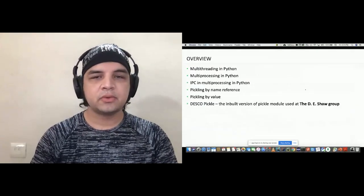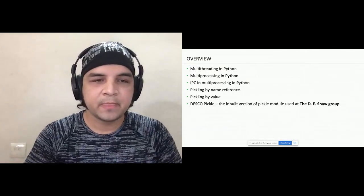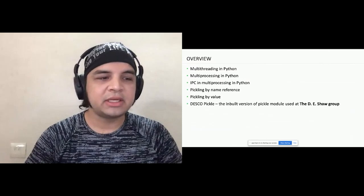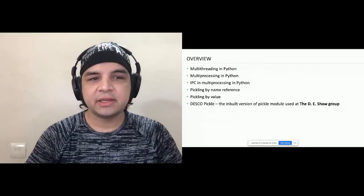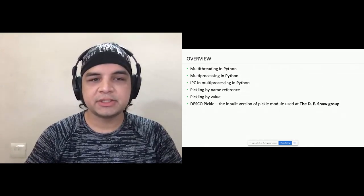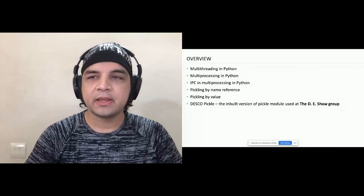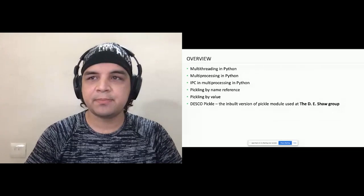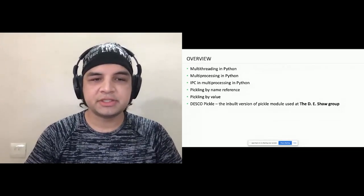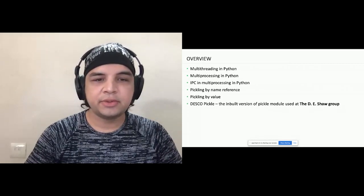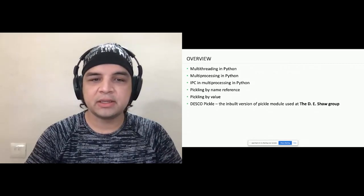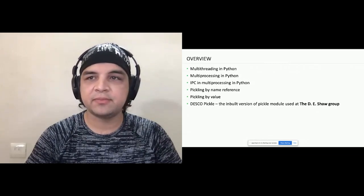Here is the overview of topics we will cover today. We will see the limitations and advantages of both multi-threading and multi-processing in Python. We will then move on to interprocess communication and how it generally happens in Python. Then we will see the serialization part, called pickling in Python — how it is achieved and the two types: by name reference and by value. Lastly, we will look at some features of DiscoPickle, the pickle module we use at DE Shaw for quantitative research and general development.